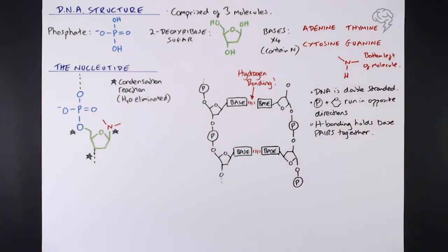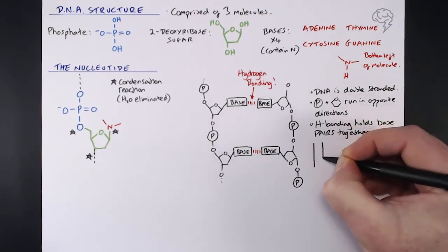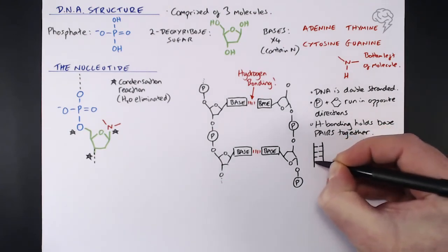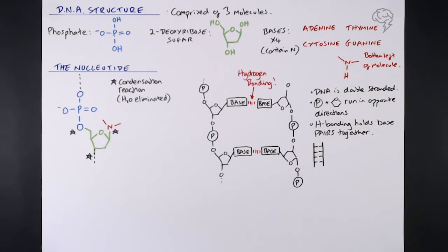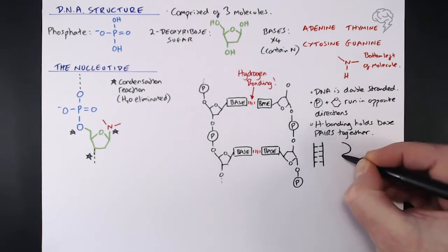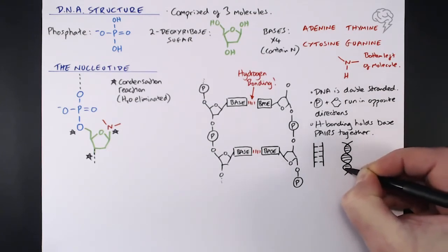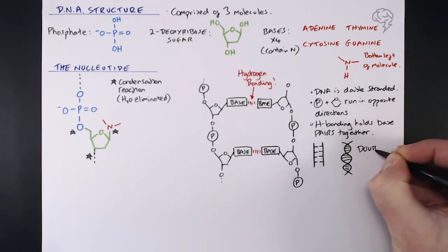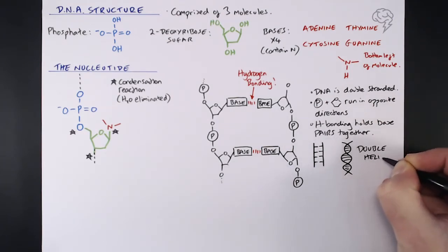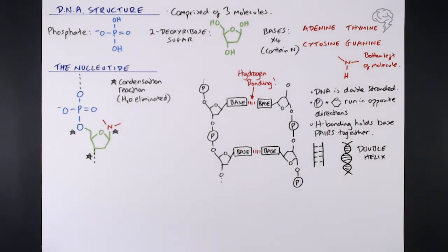Rather rudimentally it looks like a ladder — the two black lines are the phosphate-sugar backbones, and the bases are like rungs on a ladder going into the middle and holding those two strands together. But DNA actually twists — it forms a double helix. It's called a double helix because we've got those two strands spinning around each other like a helter-skelter. In chemistry we just need to know the bonds involved: the phosphate, the sugar, and the hydrogen bonding between the base pairs.